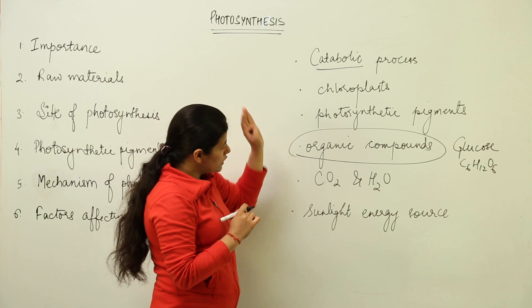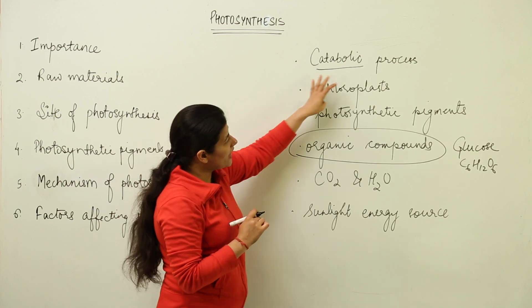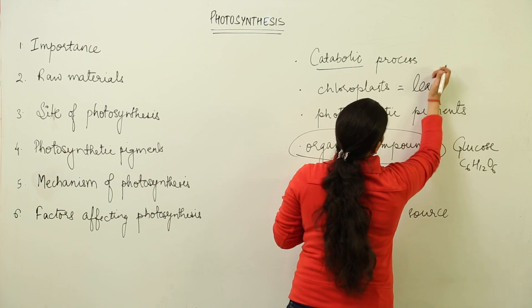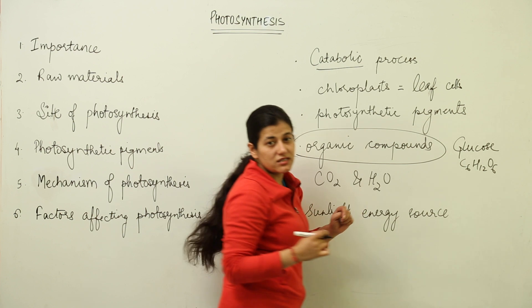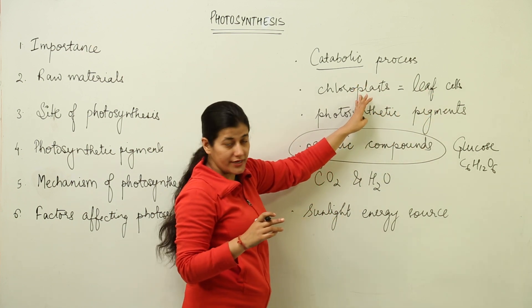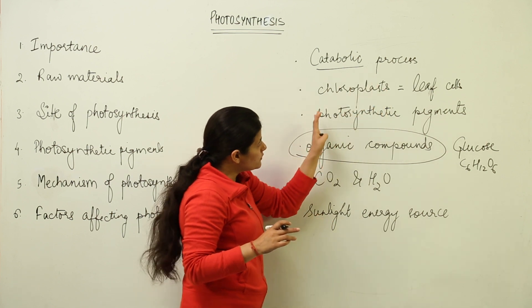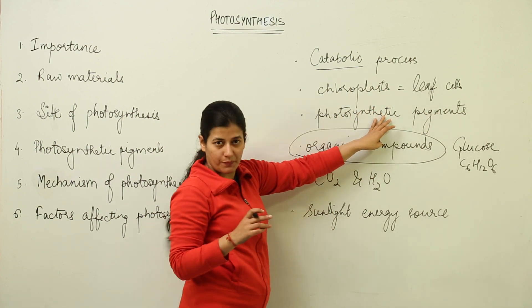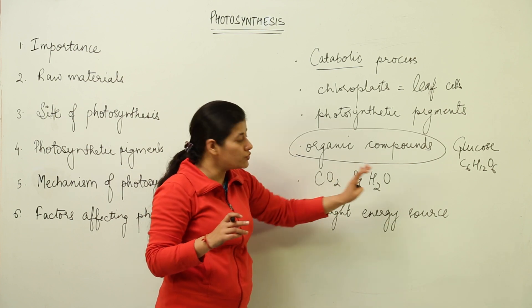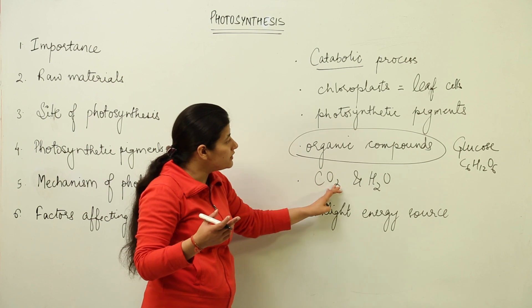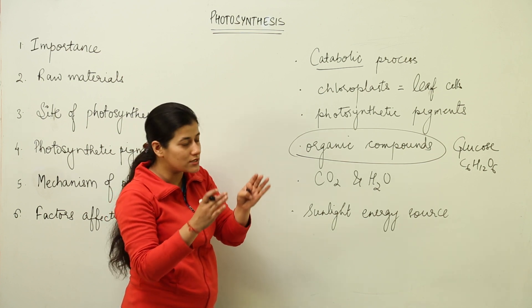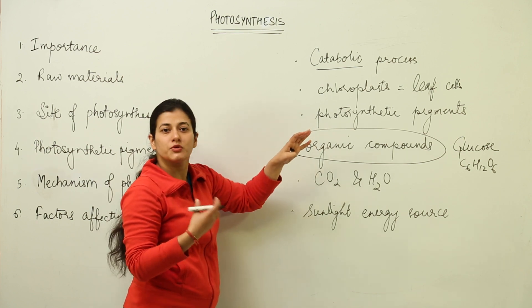It is a catabolic process responsible for formation of organic compounds inside the chloroplasts, which are present in the leaf cells. We did talk about chloroplasts when we discussed the anatomy of the leaf. This process takes place inside the leaf cell chloroplasts. Now, what does this chloroplast possess? It possesses photosynthetic pigments. Inside these pigments, the solar energy is used — sunlight is used as an energy source, and CO2 and H2O as raw materials, and glucose is formed.